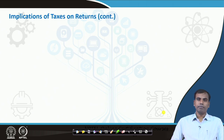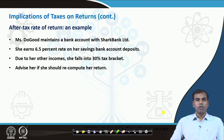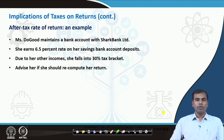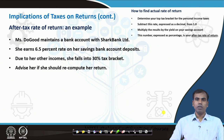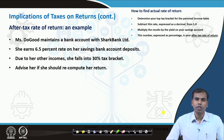A simple example: Ms. Do Good maintains a savings bank account with a bank that offers her an interest rate of 6.5 percent per annum. She also has other sources of income, which is why she falls in the top tax bracket of 30 percent. If we want to advise her whether her rate of return of 6.5 percent is the actual return, we follow the structure just discussed. First, determine the top tax bracket — Ms. Do Good is in the 30 percent tax bracket. Second, subtract that percentage from 1: 1 minus 0.30 gives us 0.70.